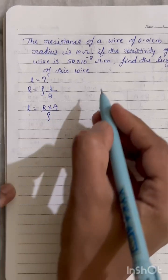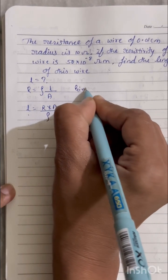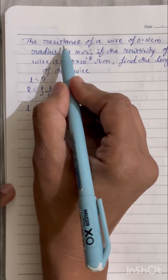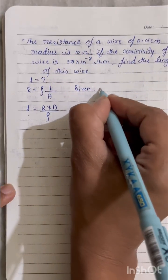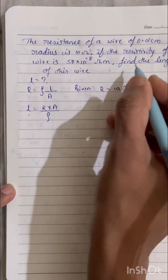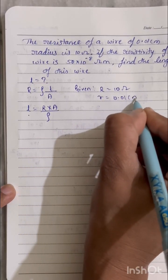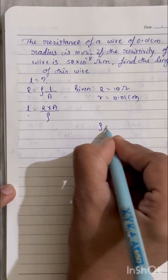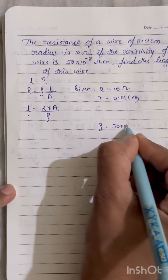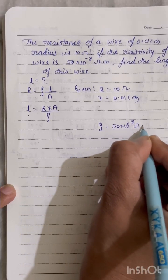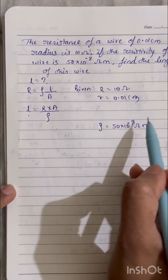Now see here, from this to find out the length, what all they have given? Let me write. Given: the resistance has been given, that is 10 ohm, and they have given radius of the wire, that is 0.01 centimeter, and then given the resistivity, that is 50 into 10 power minus 8 ohm meter.